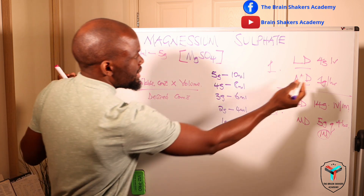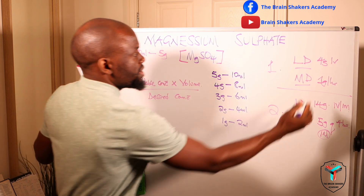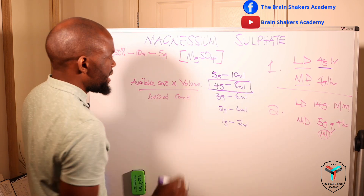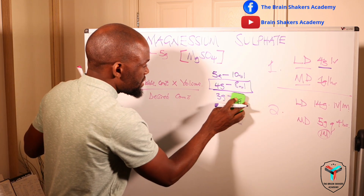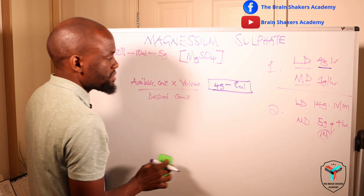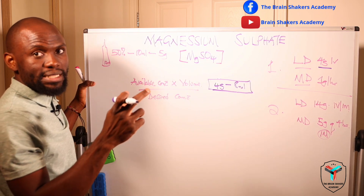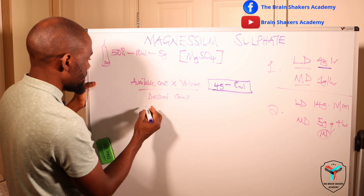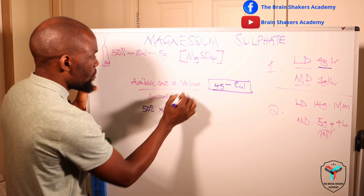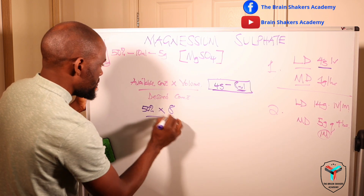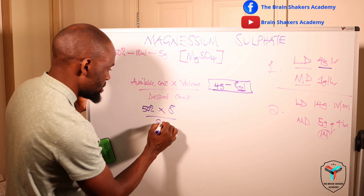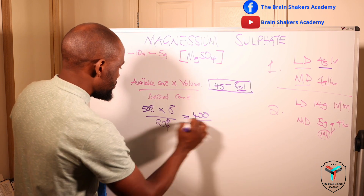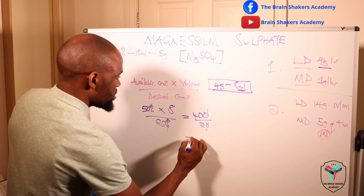Using the first method, we need 4 grams IV, which is 8 mL. That 8 mL is still 50% concentration, so we apply the formula: 50% × 8 mL ÷ 20% = 400 ÷ 20 = 20 mL. So your total volume to administer intravenously is 20 mL — you will have reduced the concentration from 50% to 20%.